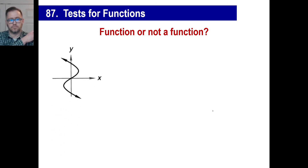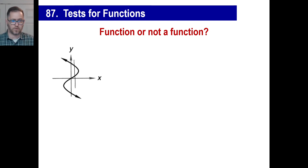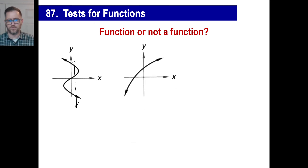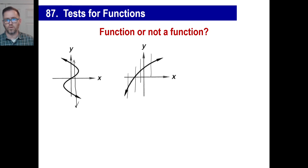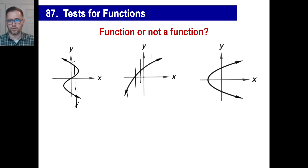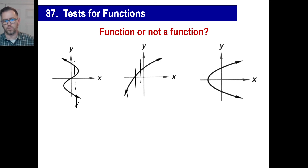Is this next graph a function based on the vertical line test? No — if you put a vertical line, it hits the curve at multiple points: $1, $6, negative $12, whatever it is. Not a function. What about the funky-looking one? It looks like any vertical line you try — here, here, here — doesn't pass through more than one point, so that is a function. And this last one — no. You can draw a vertical line practically anywhere and it hits in more than one point.